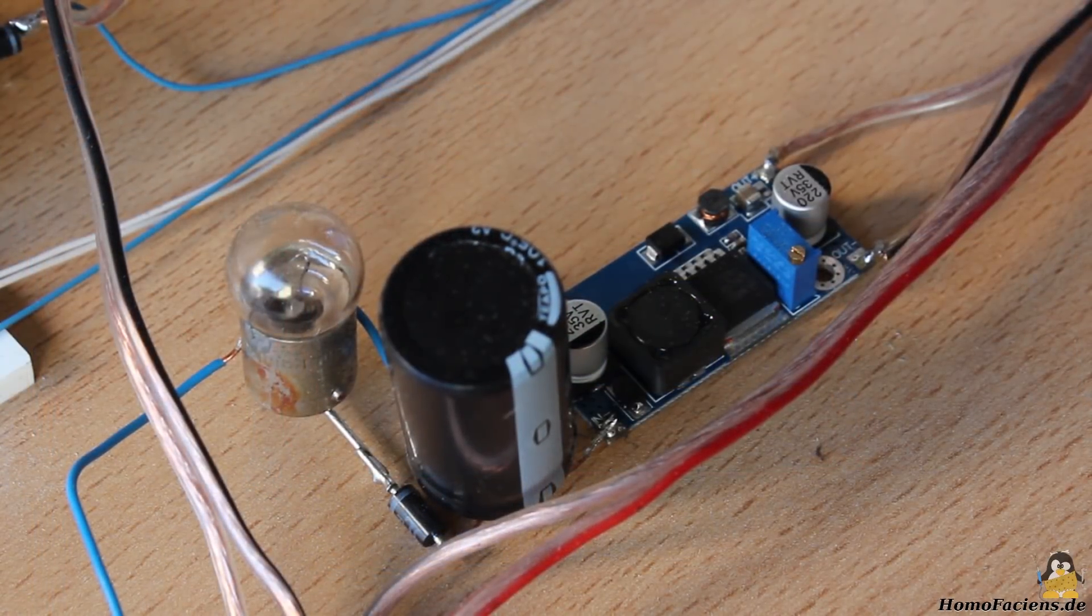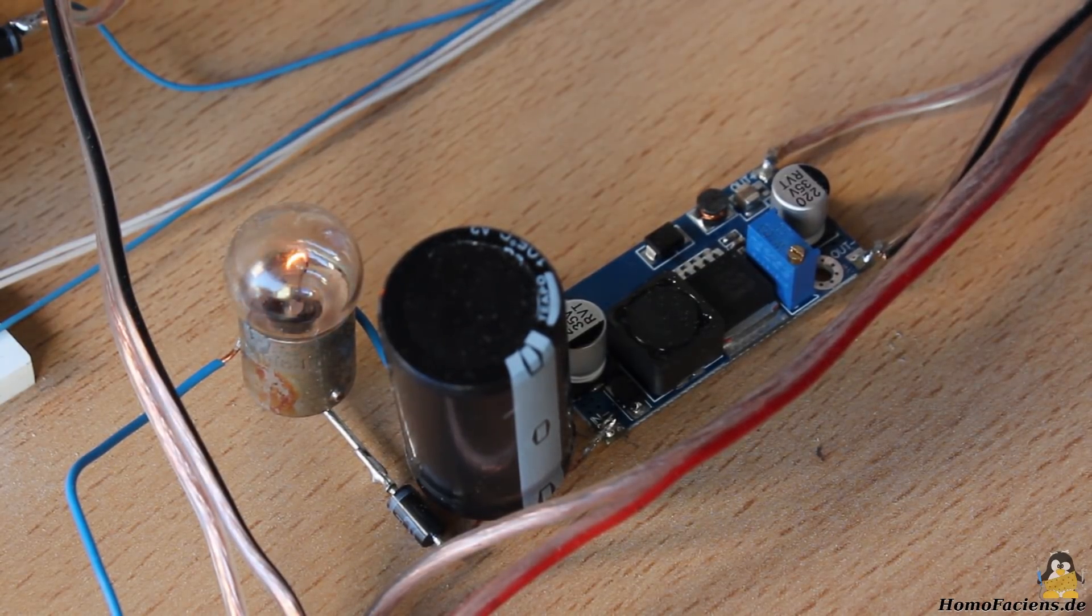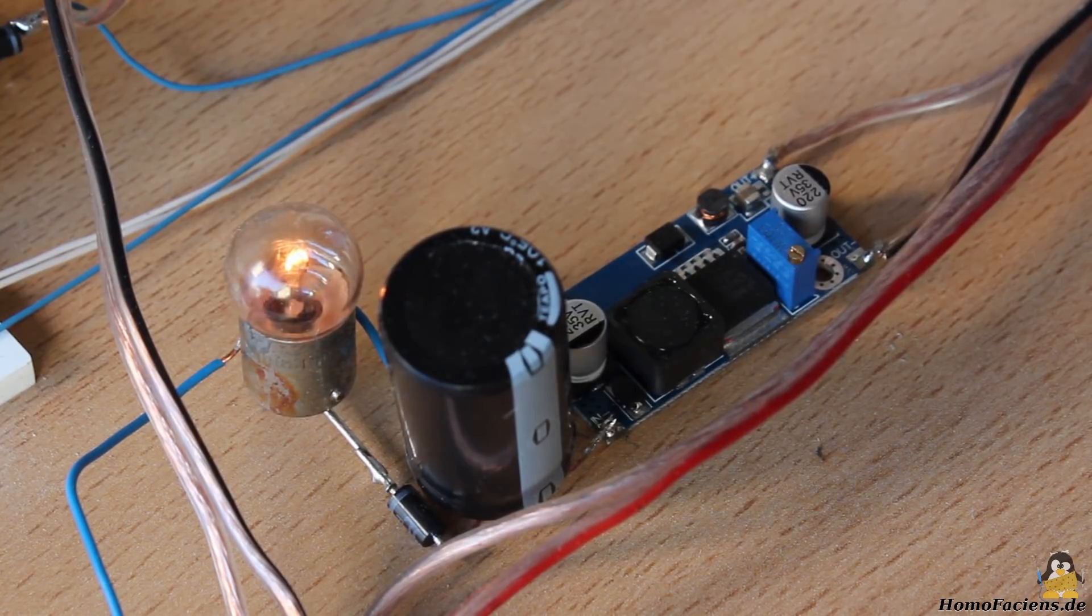As you can see, the filament bulb starts glowing at higher revolution speeds. The excess of electric power is dissipated. A small fraction is emitted as visible light.